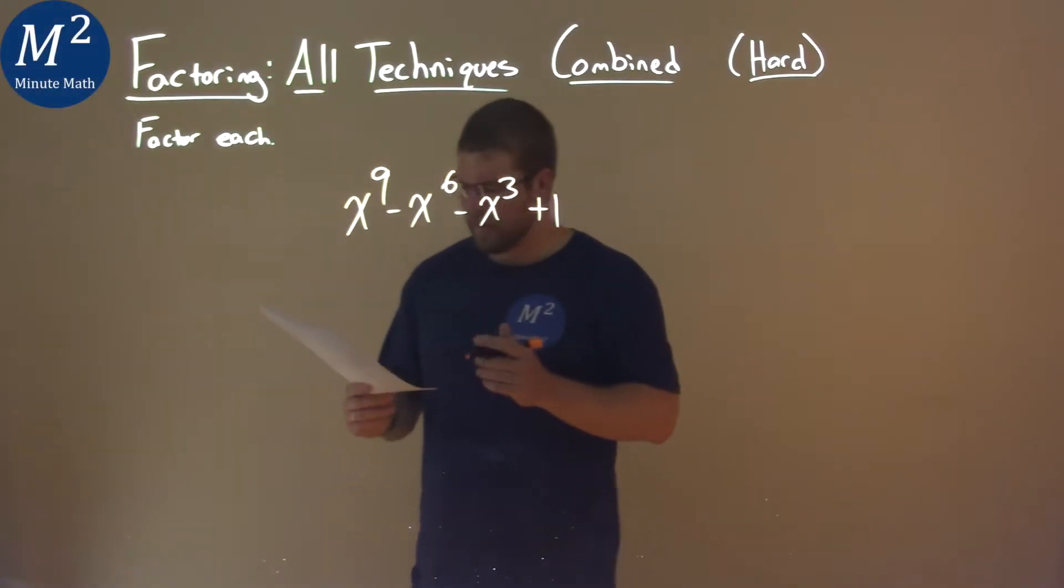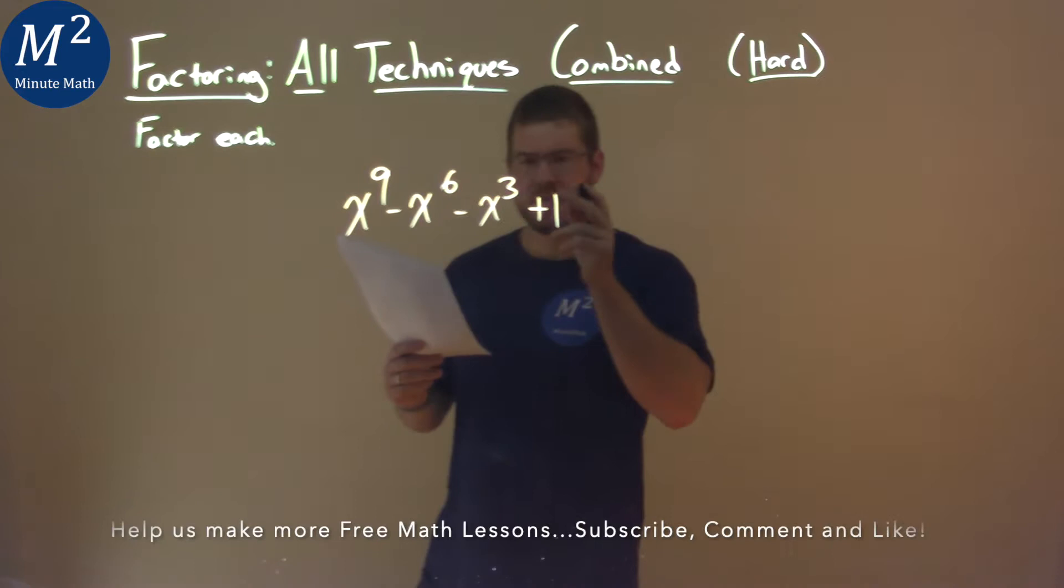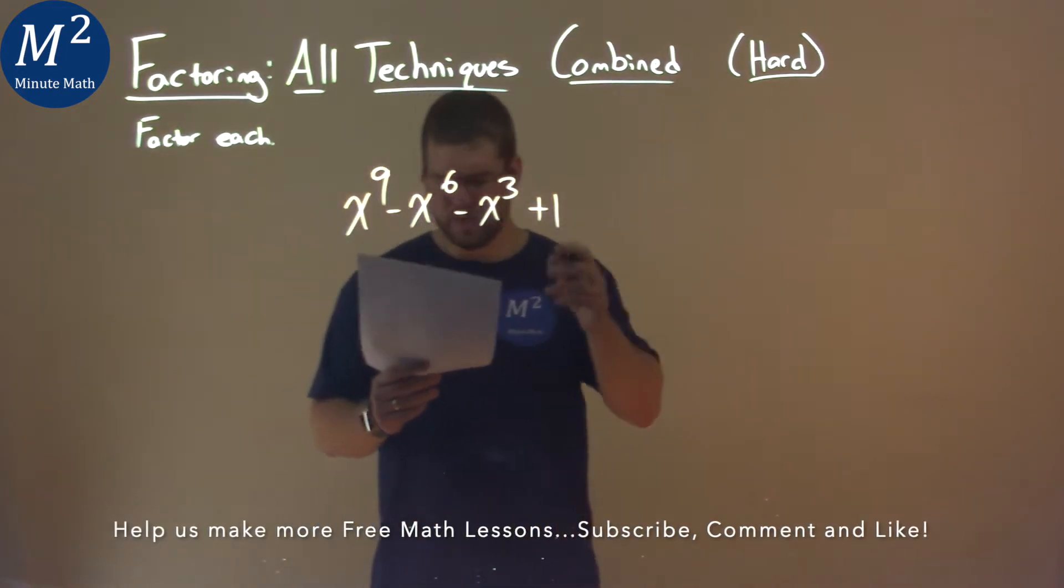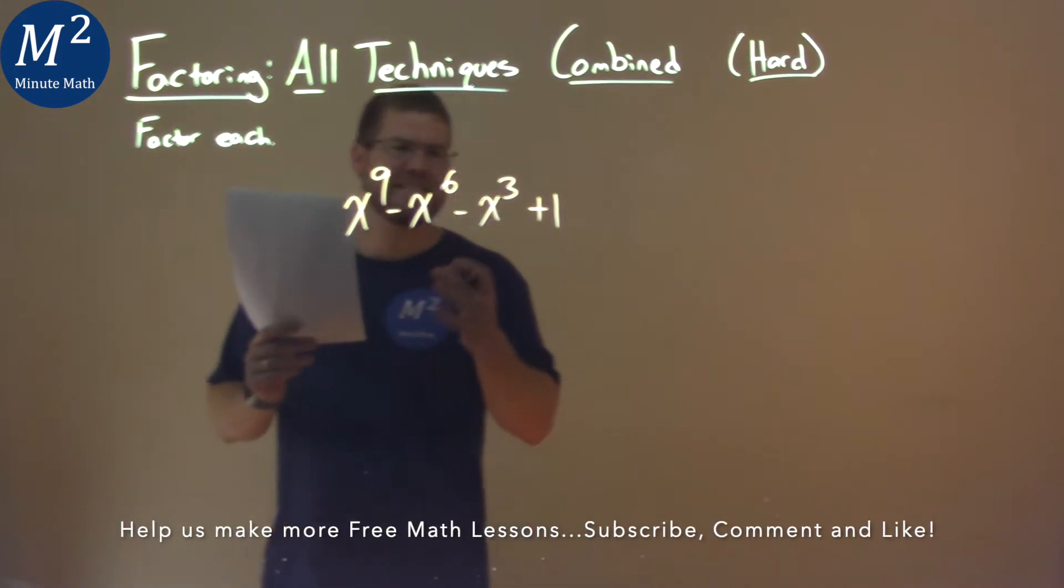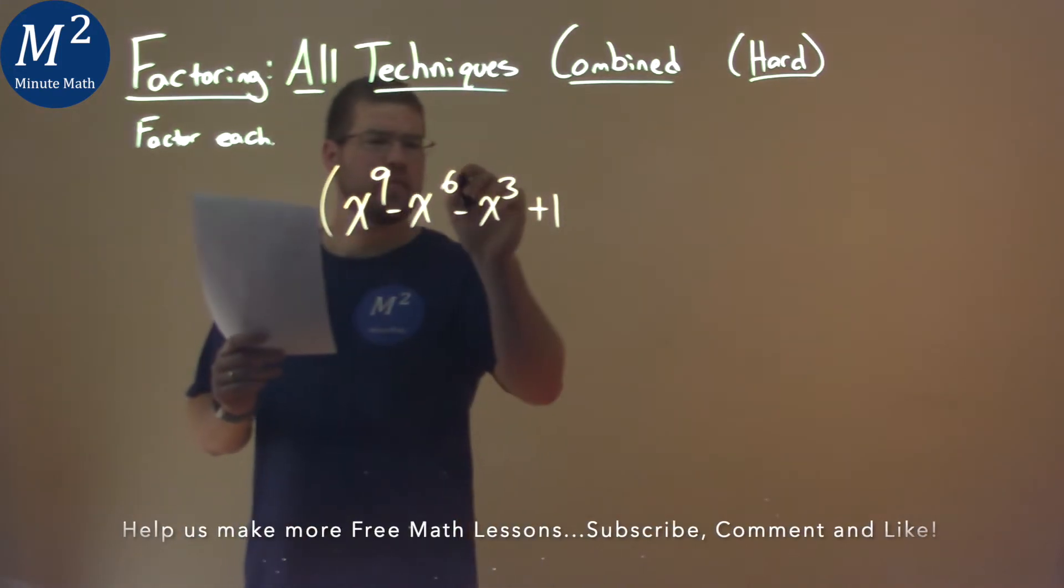We're given this problem right here, x to the ninth minus x to the sixth minus x to the third plus one, and we've got to factor this. One thing I notice here is I can see some groups.